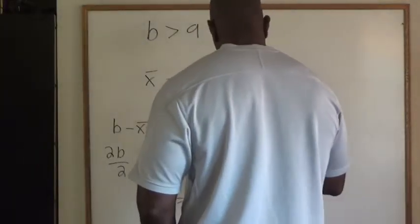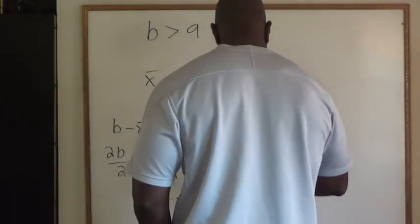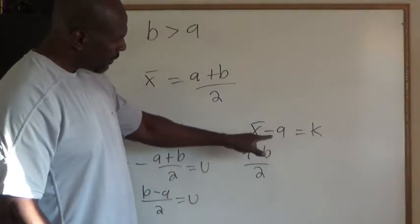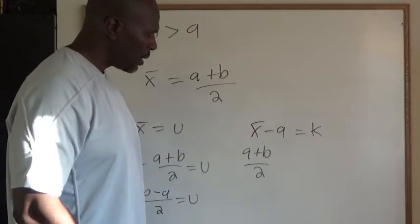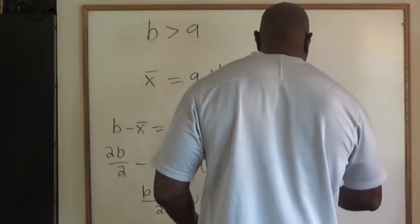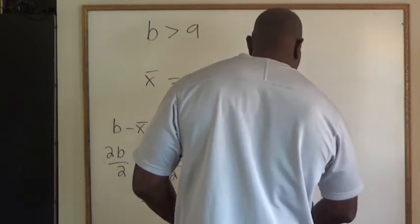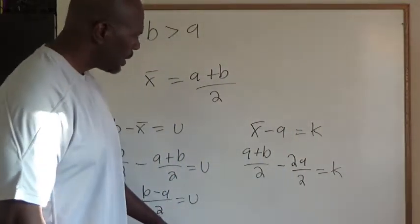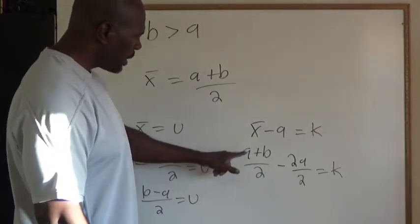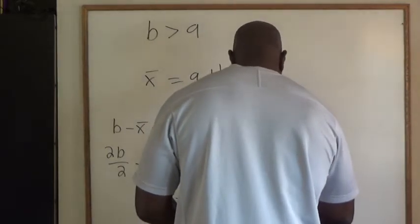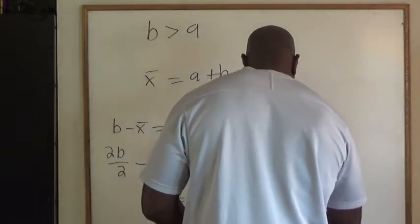So again, X bar is A plus B over 2. And again I would like A to have a denominator of 2, so I'll write it as 2A over 2. That equals K. And there's nothing really happening to the B. And A minus 2A is negative A. So that will be B minus A over 2.